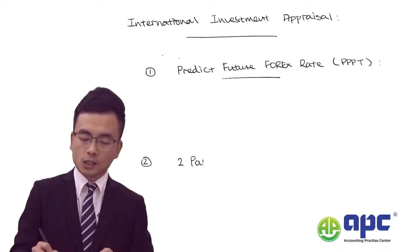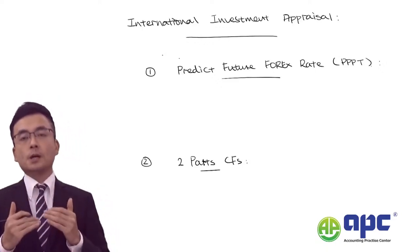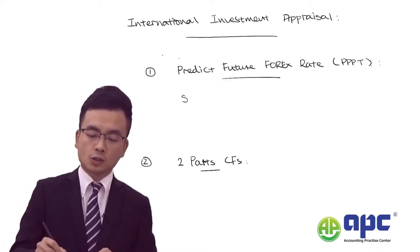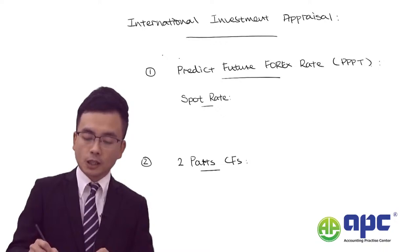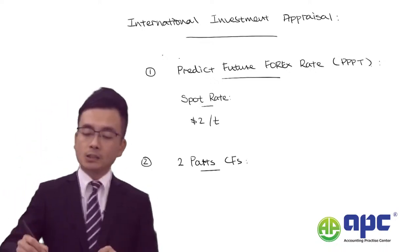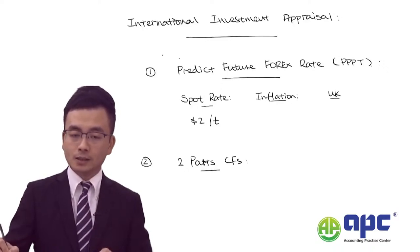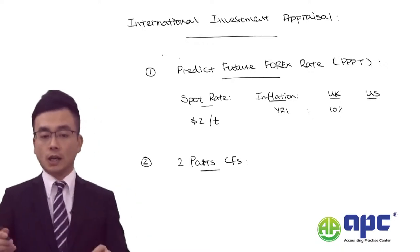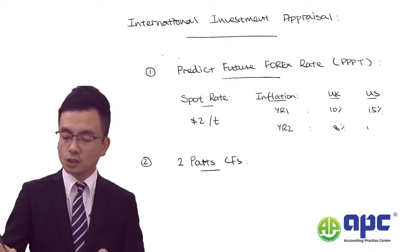The top part would be the cash flows from the overseas subsidiary, and the bottom part will be denominated in our own currency. Using purchasing power parity, understand the current spot rate — for example, for each UK pound equals $2 (or $2/£). Based on estimated inflation in both countries, for example 10% in the UK and 15% in the US in year one, and 8% and 10% in year two.